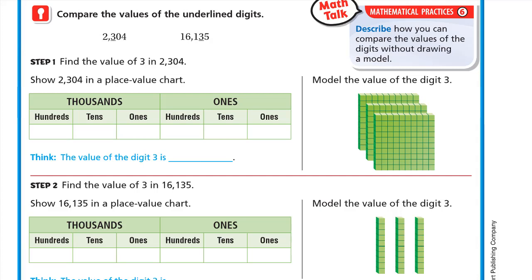Compare the values of the underlined digits. First number: 2,304. Second number: 16,135. We need to compare the digit 3 in each. Find the value of 3 in 2,304 using the place value chart: ones = 4, tens = 0, hundreds = 3, thousands = 2. So the value of the digit 3 in 2,304 is three hundreds.